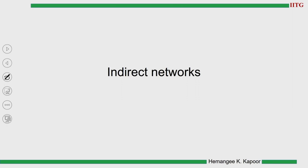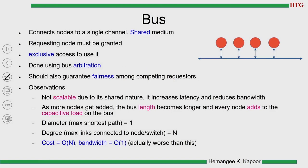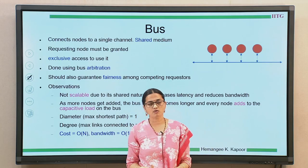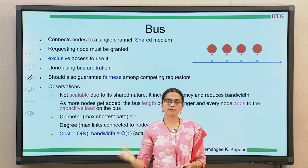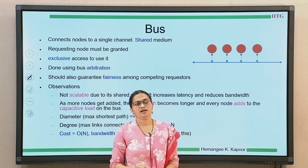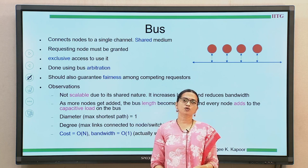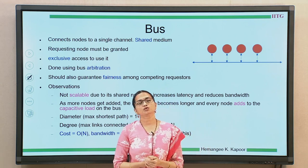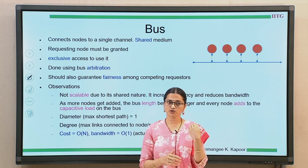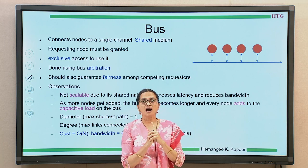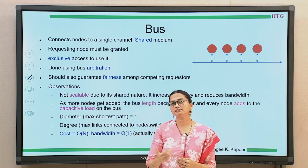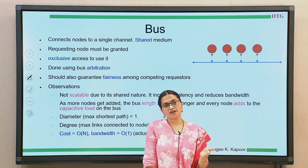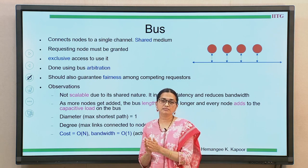We will start with indirect networks since we are already familiar with a bus type of network. A bus is the first type of indirect network. We have processor nodes, cache modules, memory modules, and some IO modules connected to a single bus. This bus is an indirect interconnect because every module has to talk with another module via the bus. When different modules connect to a bus and want to communicate, we must first arbitrate for the bus — ask permission to use it. Only one requester gets permission; others must wait. Once permission is granted, you transfer the data, then release the bus.